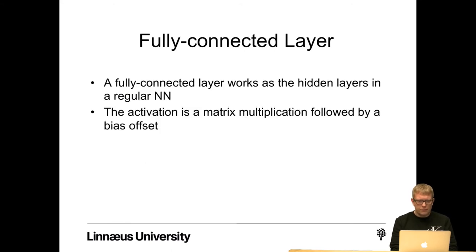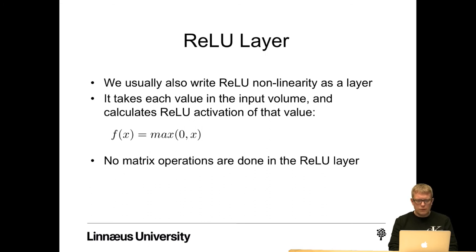The third type of layer is the fully connected layer. It works as the hidden layers or the output layer in a regular neural network, and the activation is a matrix multiplication followed by a bias offset, as covered in the lecture about neural networks. We usually also include the ReLU non-linearity as a layer. It takes each value in the input volume and calculates the ReLU activation, which is the max between 0 and X, so it will never have any negative values. No matrix operations are done in the ReLU layer.